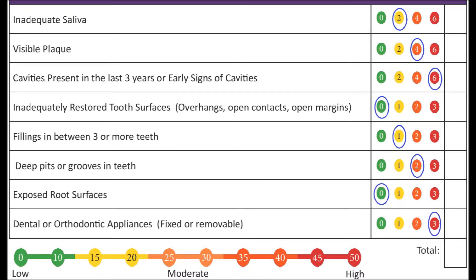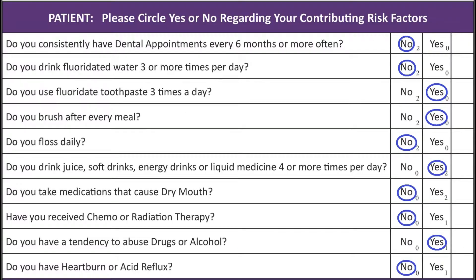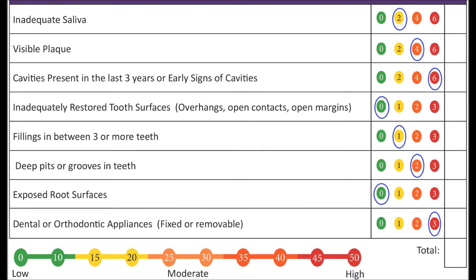record the associated numbers in the right-hand column. The numbers for each contributing risk factor are located in the lower right-hand corner, and the clinical condition numbers will match the numbers circled. You can now total both sections.